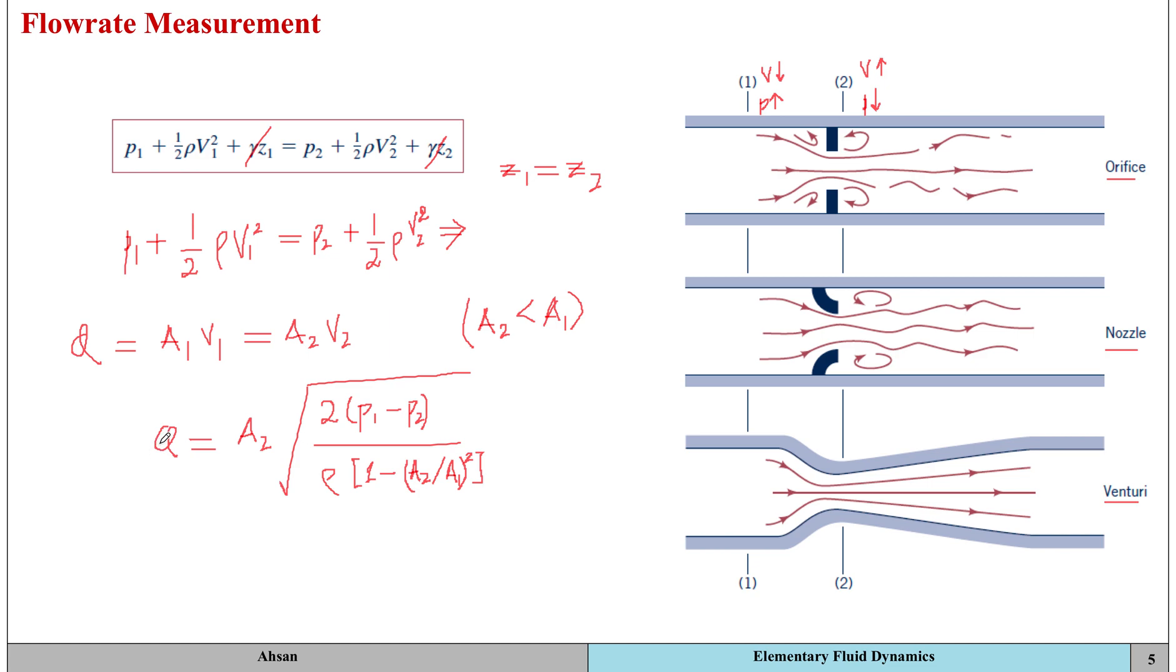If you can measure that pressure difference, you will be able to find out the flow rate. This is your ideal flow rate because the actual flow rate is going to be smaller than this theoretical result. The theoretical flow rate is always larger than the actual flow rate. This is the principle to measure flow rate within pipes.